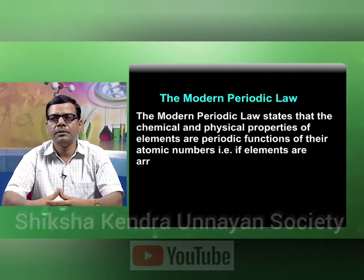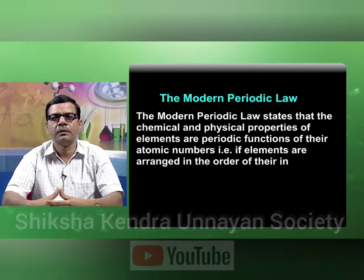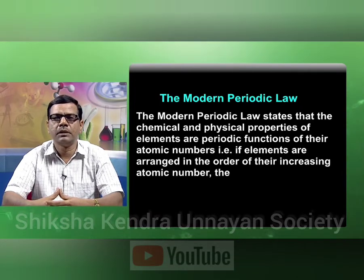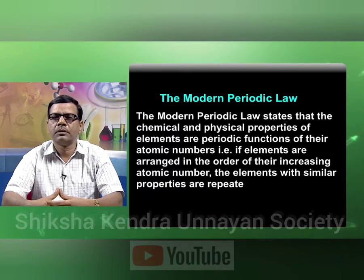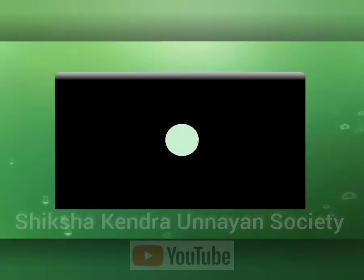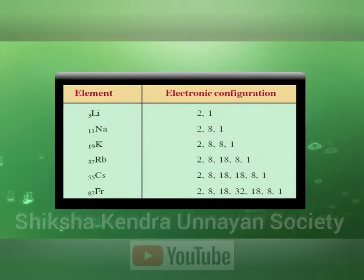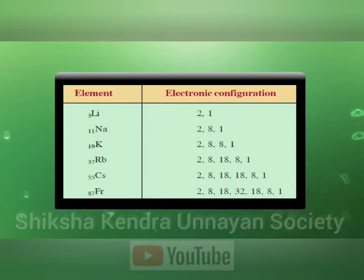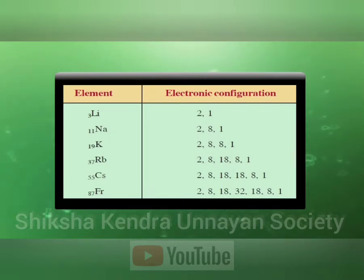That is, if elements are arranged in the order of their increasing atomic number, the elements with similar properties are repeated after certain regular intervals. This table shows different elements and regular properties — in all these elements the valence electrons are 1 — which shows the periodicity in the properties.